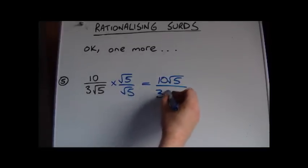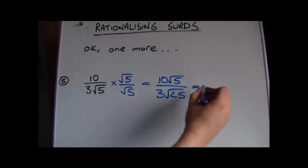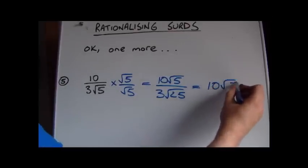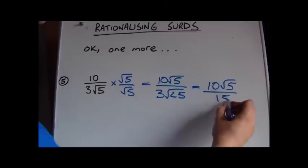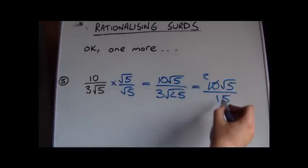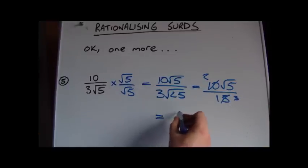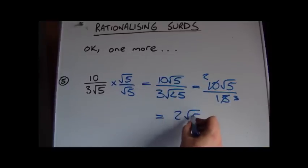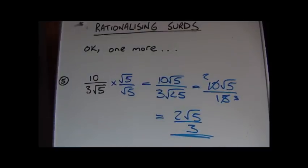Multiplying top and bottom by root 5: the bottom becomes 3 times root 25, and root 25 simplifies to 5, giving 3 times 5 which is 15. We can then cancel a factor of 5 from top and bottom, giving a final answer of 2 root 5 over 3. We no longer have a surd in the bottom of the fraction, so it's been rationalized.